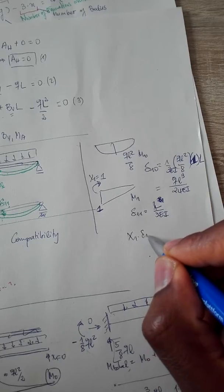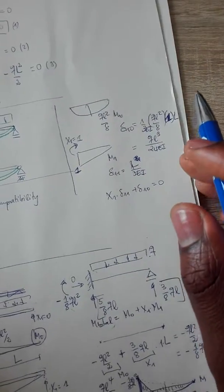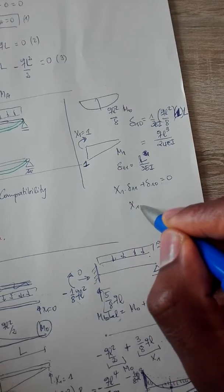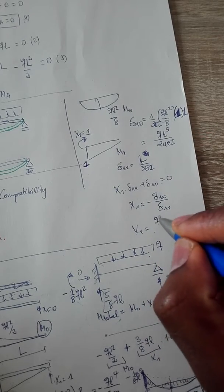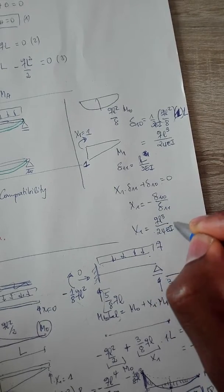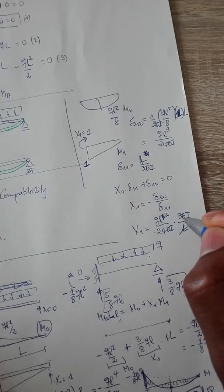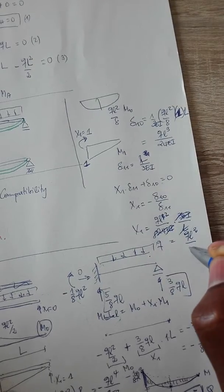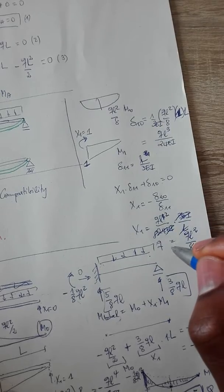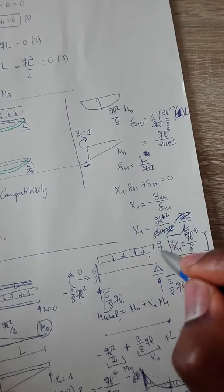The compatibility is the same: x1 times delta_11 plus delta_10 equals zero — meaning the slope of deflection there must be zero. So x1 = -delta_10/delta_11 = -(qL³/24EI) times (3EI/L) = -qL²/8. Don't forget the minus — x1 equals -qL²/8. That's the value of our moment.